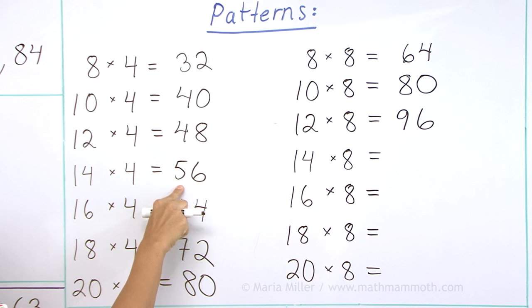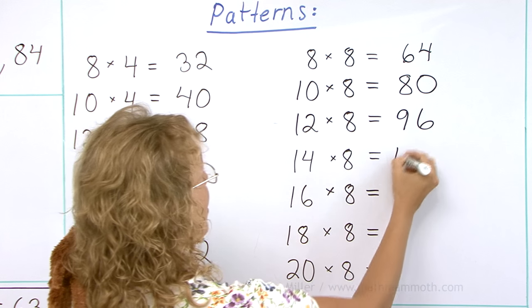Okay, how about this one? Double that one. Fifty-six. Double fifty. Double six. And add those. One hundred and twelve.